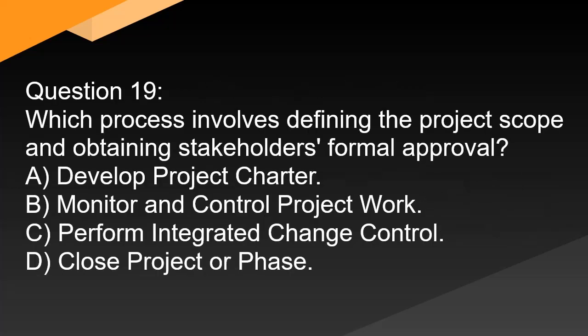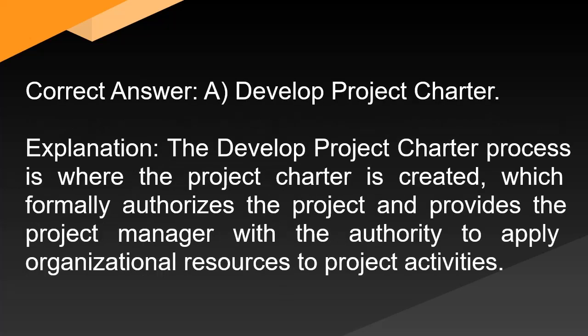Question 19: Which process involves defining the project scope and obtaining stakeholders' formal approval? A. Develop project charter. B. Monitor and control project work. C. Perform integrated change control. D. Close project or phase. Correct answer: A. Develop project charter. Explanation: The develop project charter process is where the project charter is created, which formally authorizes the project and provides the project manager with the authority to apply organizational resources to project activities.